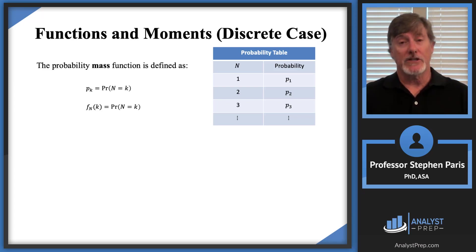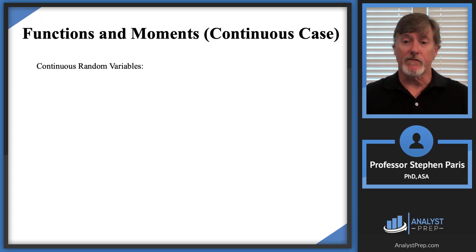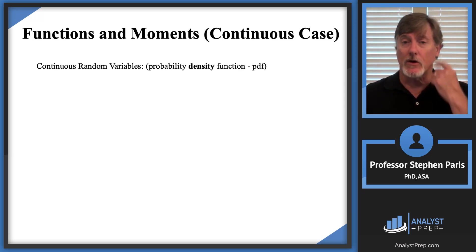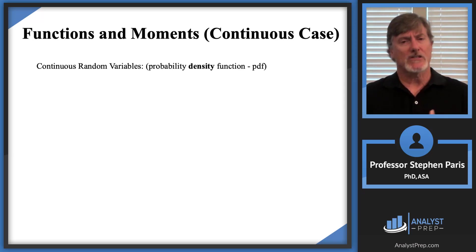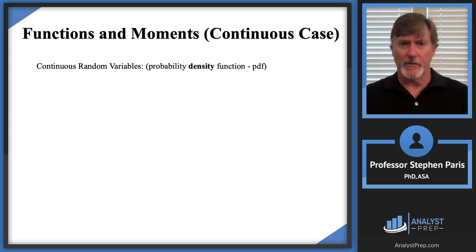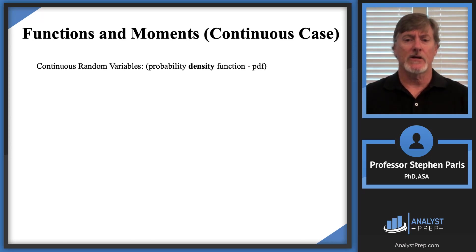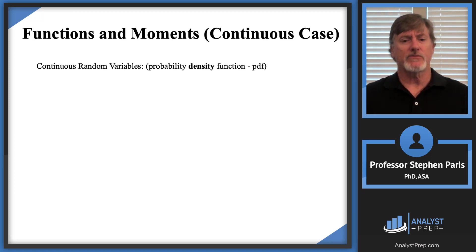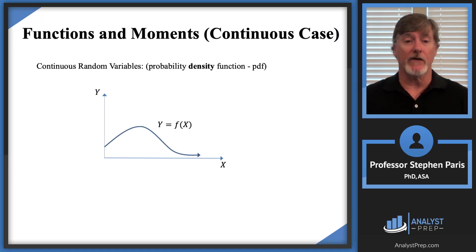With continuous random variables, we're going to use the function notation, and the function we're going to talk about first is called the probability density function — sometimes I just call this the density function. If I do, the word probability is implied, and you'll also hear this referred to as the PDF. In the continuous case, we can graph the density function and we have a continuous graph.